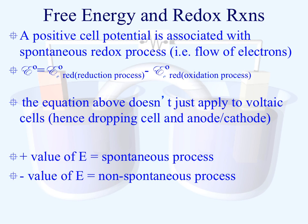What I want you to notice here is that in the equation we have set up, although it looks very similar to the one we've used previously, we've actually dropped the cell subscript. The reason is because this equation doesn't just apply to voltaic cells — it applies to any redox process. If you have a positive E value, you have a spontaneous process; if you have a negative E value, you have a non-spontaneous process.